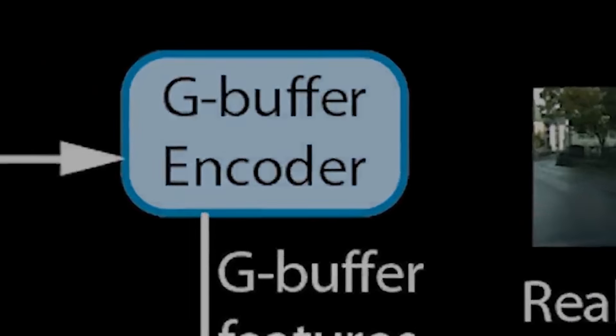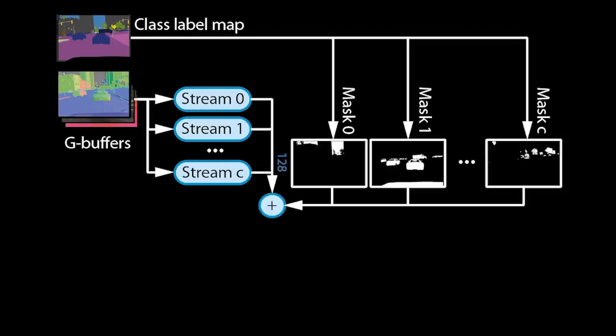Let us now zoom in on the G-buffer encoder. From the G-buffers, we can derive a semantic class label map, which assigns an object ID to every pixel. We pass the G-buffers through multiple convolutional network streams and fuse the streams again based on the object IDs. This allows the encoder to learn different ways of processing for each type of object — for example, trees will be treated differently from cars.